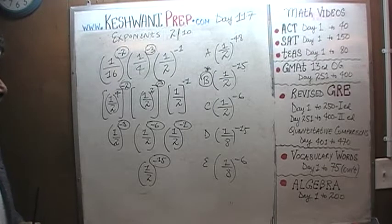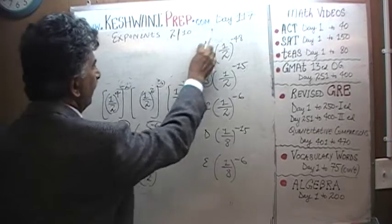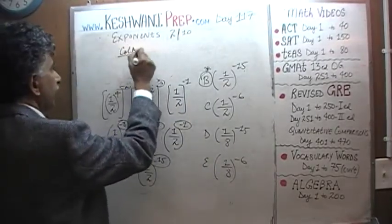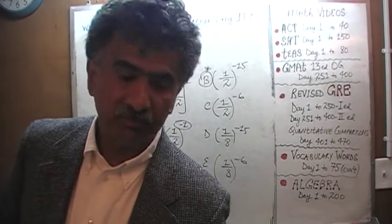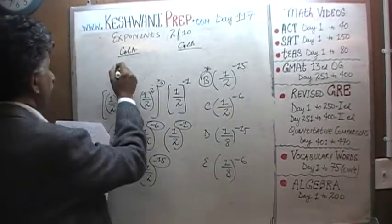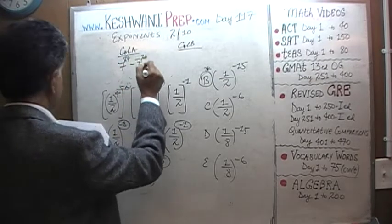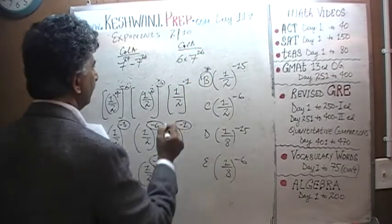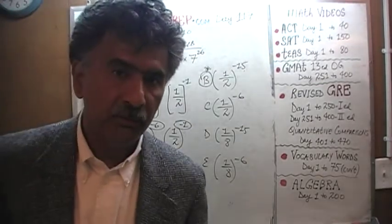And then we will do the next one. As soon as I put the problem on the blackboard, I want you to do it yourself. Here's the next problem. In the next problem, we are given two quantities in two columns, Column A and Column B. Our job is to tell which column is bigger or if they are equal. The quantities are: 7 raised to 27 minus 7 raised to 26 versus 6 times 7 raised to 26. Do it yourself, and then resume the video and we will compare the work together.